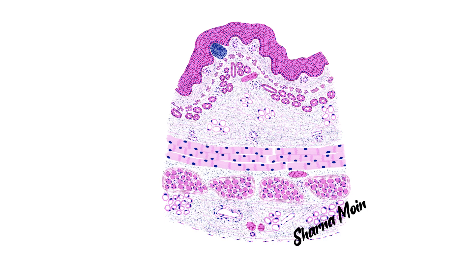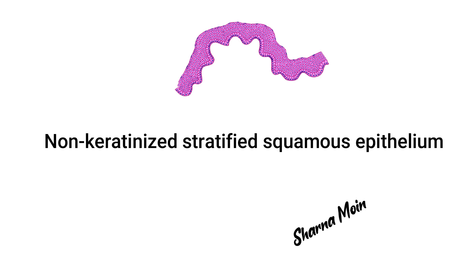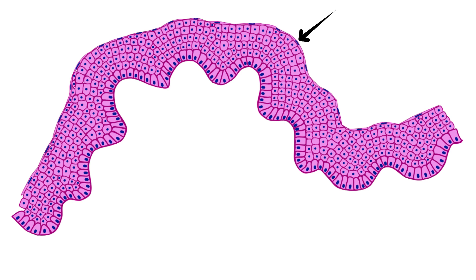First, the mucosa. This portion has three layers again: the lining epithelium, the lamina propria, and the muscularis mucosa. The lining epithelium of the oesophagus is a non-keratinized stratified squamous epithelium. If we zoom into this picture, you will be able to see this is multi-layered — or stratified. You can also see the top layer here; the nuclei of this layer are flat.